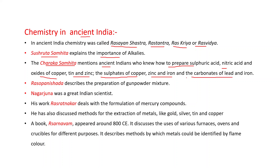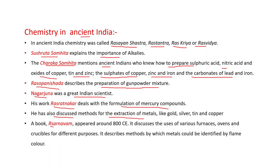The carbonates of lead and iron are also mentioned. Rasa Panishta describes the preparation of gunpowder mixture. Nagarjuna was a great Indian scientist; his work Ras Ratnakar deals with the formulation of mercury compounds. He also discussed methods for the extraction of metals like gold, silver, tin, and copper.